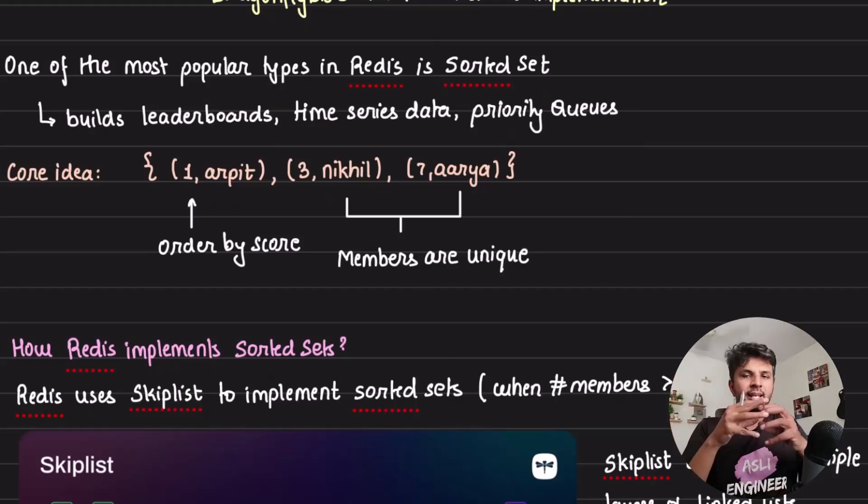The whole idea is simple: it's a set with unique members, but with each member a score is attached to it. When you retrieve the elements, you retrieve them in that order, which is why it's used in building leaderboards or priority queues. Uniqueness is guaranteed and order is guaranteed, which is why they're called sorted sets.